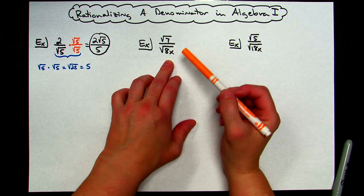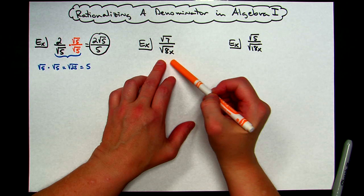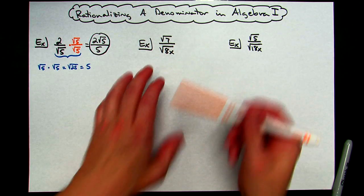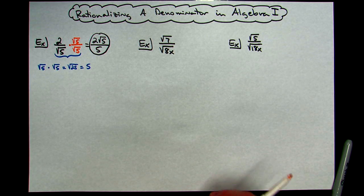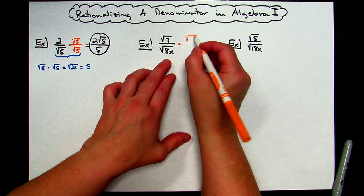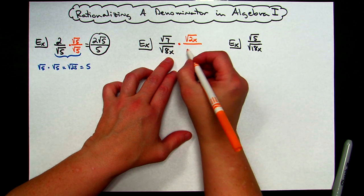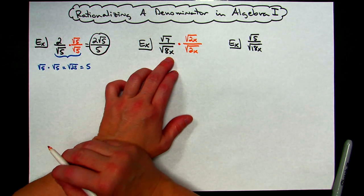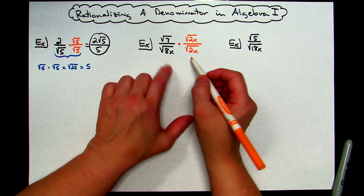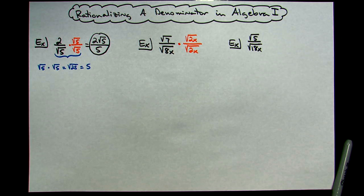So on this one, my suggestion is to ask yourself: I've got square root of 8 — is there a perfect square really close to 8 that I could multiply by to make that radical fall out on the bottom? And there is: 8 times 2 is 16, and square root of 16 is a perfect square. So I'm going to choose to multiply by square root of 2, and I want that x to fall out as well, so I'll do square root of 2x over square root of 2x. It may be hard at first to come up with what you're going to multiply by, but it's a form of 1. When I multiply those denominators, I'm going to have square root of 16x squared, both of which are perfect squares — and that's what I want.